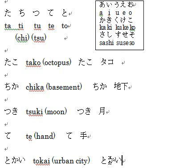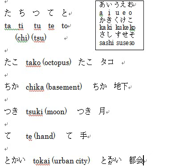TOKAI means urban city or urban area. The kanji for TOKAI is this one. はい。That's all for today and I hope you enjoyed. Next lesson will be NA NI MU NE NO. はい、じゃまたね。バイバイ。